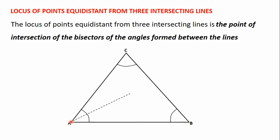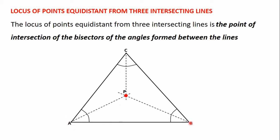So to get the locus, we will bisect the angle formed at point A — represented with these short dashes — then bisect the angle formed at point B, represented with these short dashes, and finally bisect the angle formed at point C, represented with these short dashes. These three bisectors will meet at this point. I'm going to call this point P. Point P is the point of intersection of the three bisectors, which gives us the locus of points equidistant from the line AB, the line AC, and the line BC.